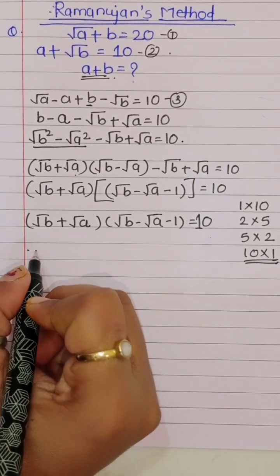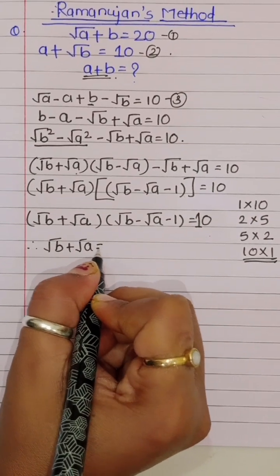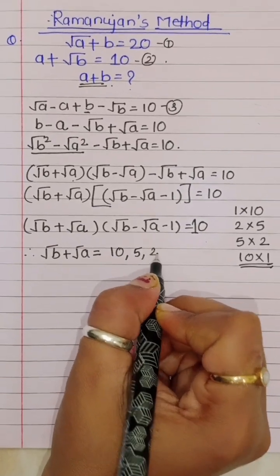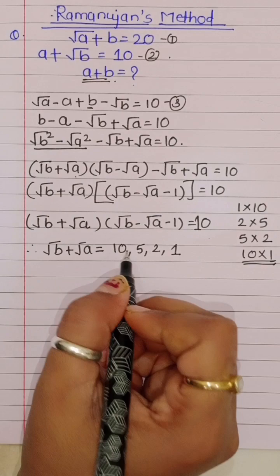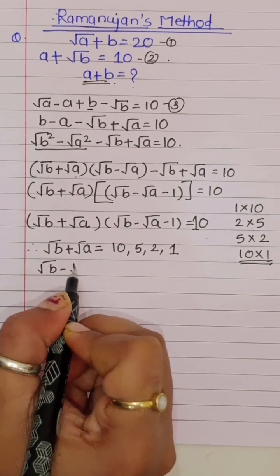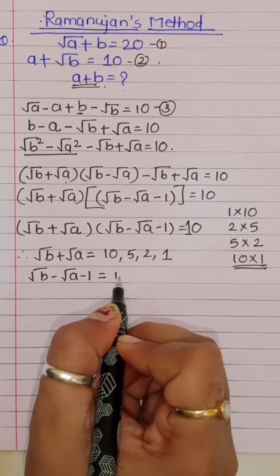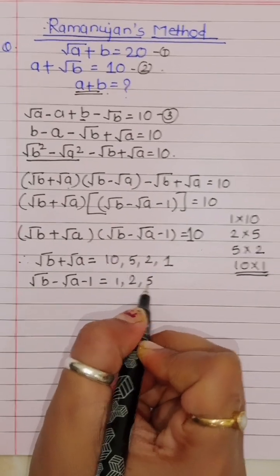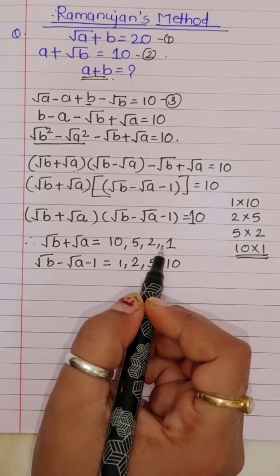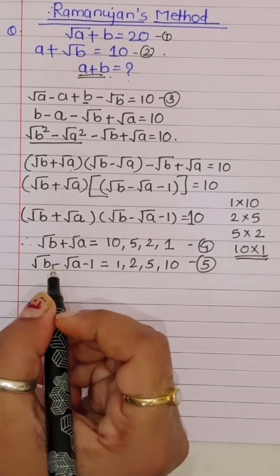Therefore, square root of b plus square root of a can be 10, 5, 2, or 1 — these are the factor pairs for 10. And correspondingly, square root of b minus square root of a minus 1 equals 1, 2, 5, or 10. This gives us equation 4 and equation 5.